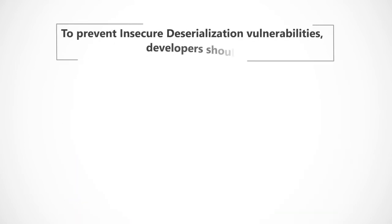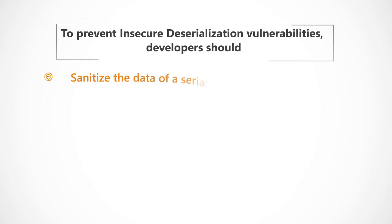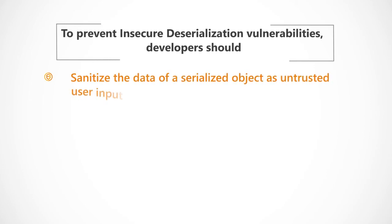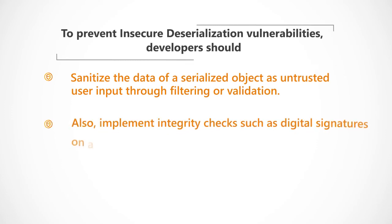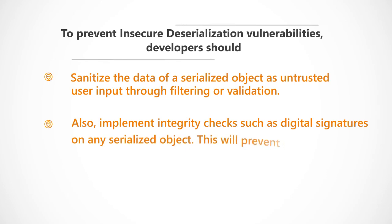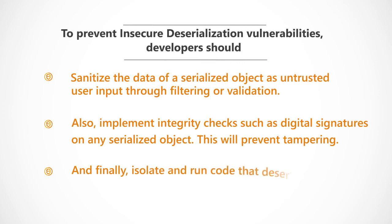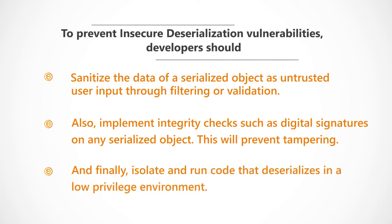To prevent Insecure Deserialisation vulnerabilities, developers should sanitise the data of a serialised object as untrusted user input through filtering or validation. Also, implement integrity checks such as digital signatures on any serialised object — this will prevent tampering. And finally, isolate and run code that deserialises in a low-privilege environment.